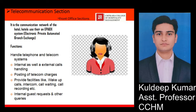The telecommunication section is the network of the hotel. Hotels nowadays use their own EPABX system — Electronic Private Automated Branch Exchange — which maintains the network within the hotel and connects all extensions across various departments. The functions of the telephone section include handling the telephone and telecom system, managing internal and external calls, posting telecom charges to the guest bill, and providing facilities such as wake-up calls, intercommunication, call waiting services, and call recording.